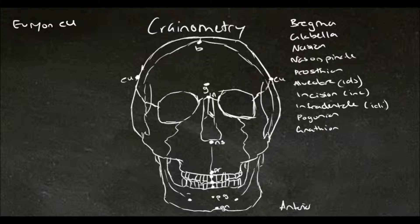The next point we're going to have a look at is called the zygion. Again, this is found by using instrumentation and it marks the most lateral points of the zygomatic arch, so here and here.